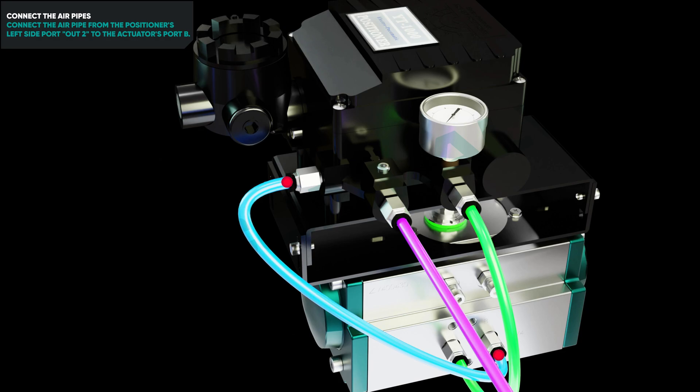Connect the air pipe from the positioner's left side port, out two, to the actuator's port B.